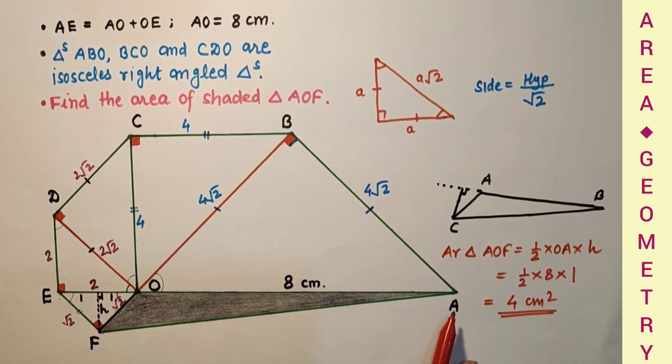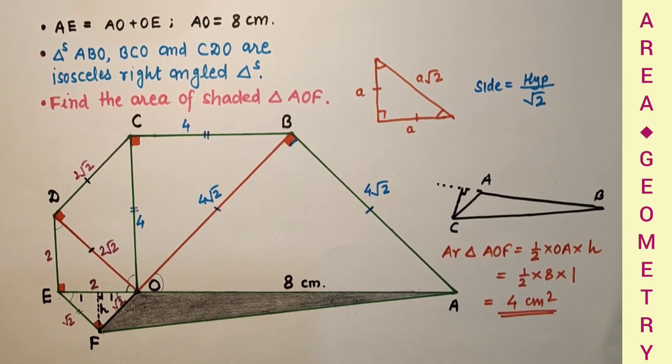Therefore the area of the shaded triangle AOF is equal to 4 centimetres squared.